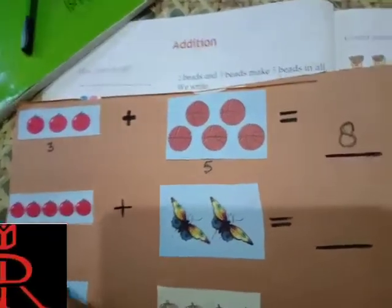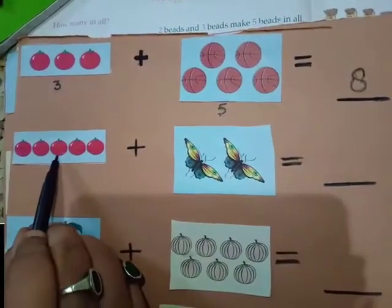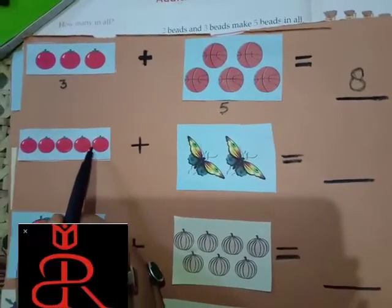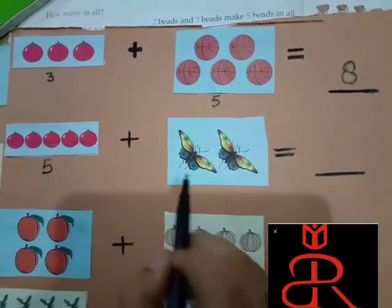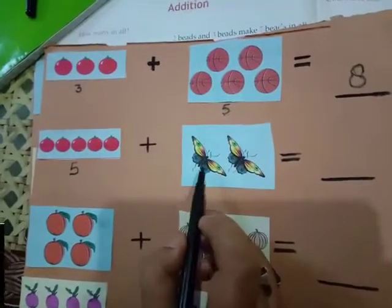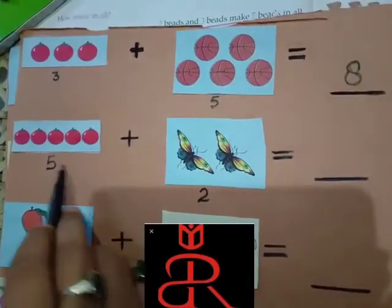Now, question number two. Here, how many tomatoes we have? One, two, three, four, five. It means we have five tomatoes. And how many butterflies we have? One, two. So, now, we have to add it.